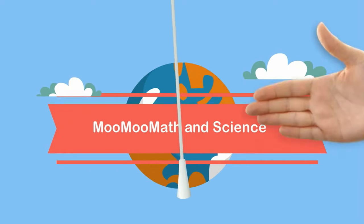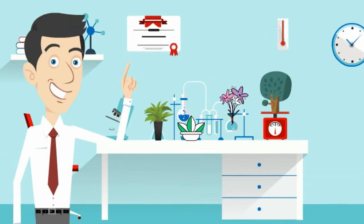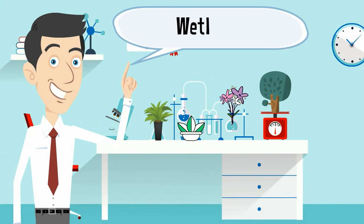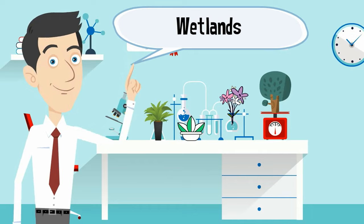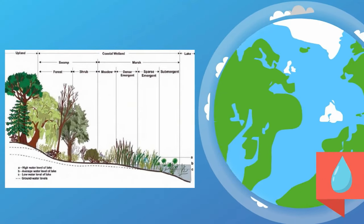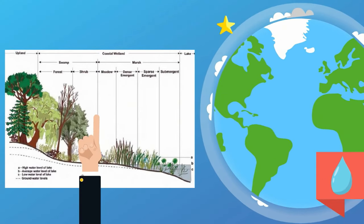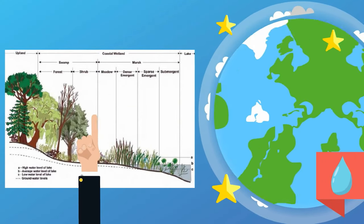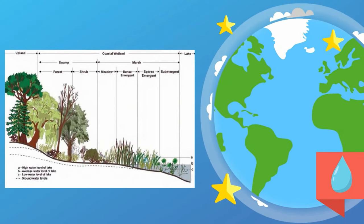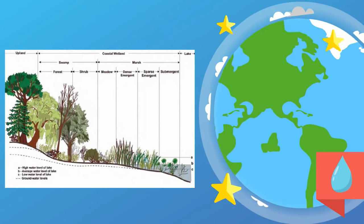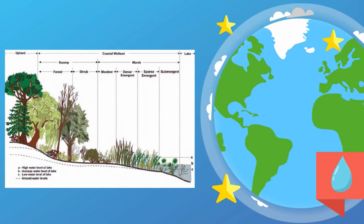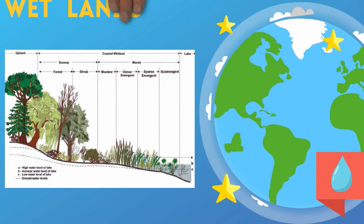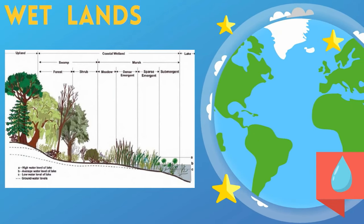Welcome to Mimum Math and Science. In this video I would like to talk about wetlands. Wetlands are aquatic ecosystems that are a transition between land and lakes, ponds, or other bodies of water. They are literally wetlands.